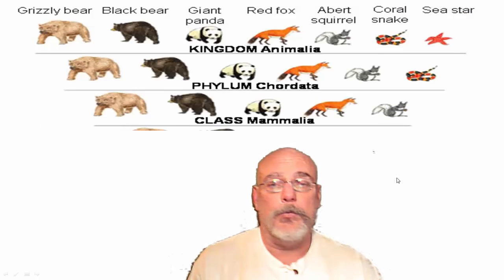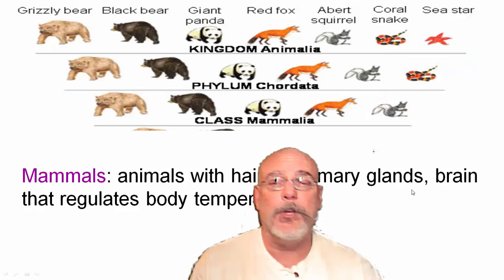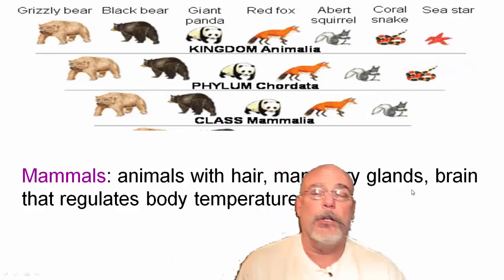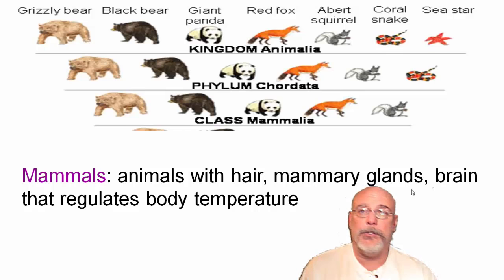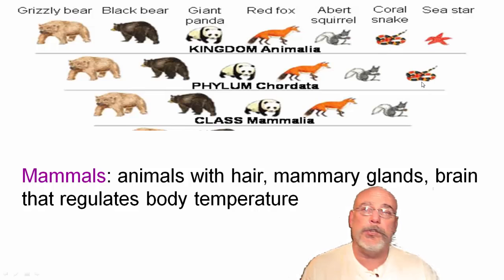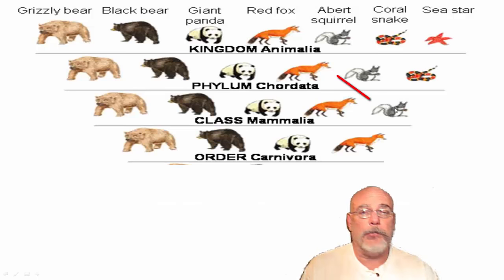Next is the class Mammalia — and that's where Mr. Snake gets excluded, because the snake is not a mammal. Mammals have hair, they can produce milk for their young, and they have a brain that regulates their body temperature — a form of homeostasis. Snakes need to sun themselves on a hot rock to keep their temperature up; they can't regulate it like we can.